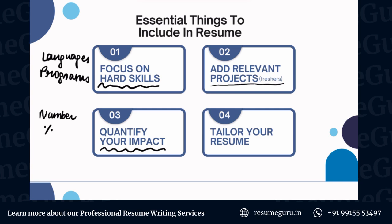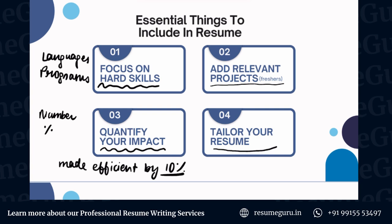Third is quantifying your impact. Quantification basically means adding numbers and metrics — it could be numbers, percentages, or anything. For example, you made things efficient by 10%. Basically, the work you have done for the company, what all you have achieved, you try to quantify it and give a number to it if possible. This helps you showcase your work in a more substantial manner and it looks more impressive.